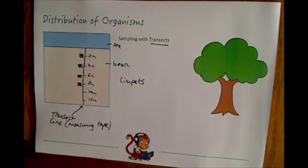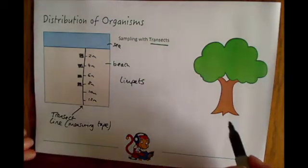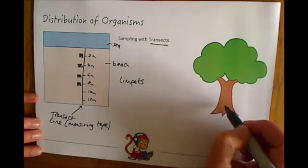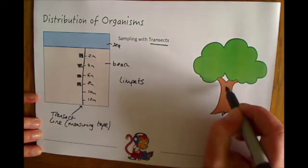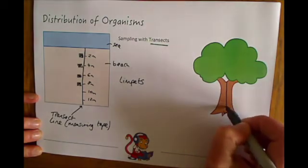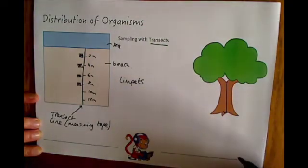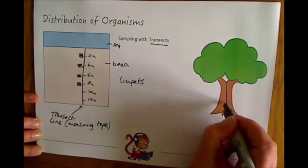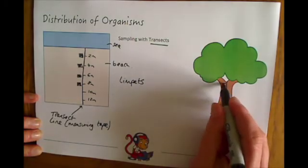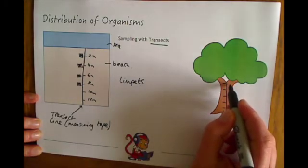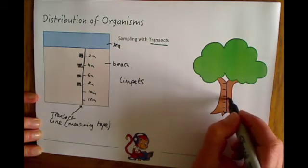Similarly, you can do a vertical transect where you might do a transect up a tree, starting from the bottom and going all the way up to the top, or top to bottom. You could look at, for example, lichen distribution along the tree, seeing where it was most distributed.